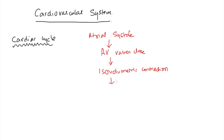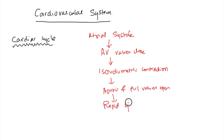Now the pressure within the ventricles becomes so high that it exceeds the pressure in the great vessels. So it's now time for the aortic and pulmonary valves to open. With the pressure gradient in place, blood gushes out of the ventricle — that is the rapid ejection phase. The pressure gradient then reduces but ejection continues, giving us the slow ejection phase.